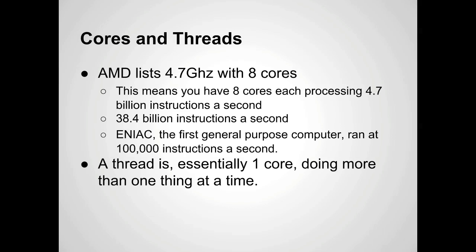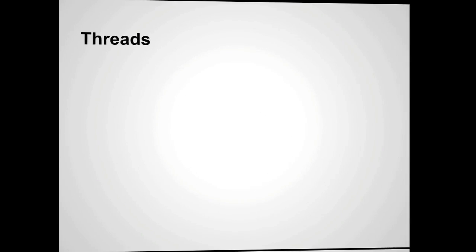And then we have threads. A thread is essentially one core doing two things at once. This is something that AMD and Intel go back and forth on. AMD has more cores; Intel does multi-threading — they call it hyper-threading. It's basically one core able to process two instructions at once.